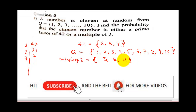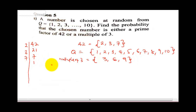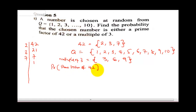The question says find the probability that the chosen number is a prime factor of 42 or a multiple of 3. The first thing we need is the probability of choosing a prime factor of 42. In 1 to 10, we have 2, 3, and 7 — that's 3 outcomes out of a total of 10 possible outcomes, so this is 3 over 10.